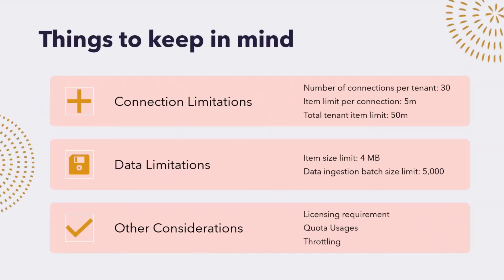Things to keep in mind when building custom connectors — there are some limitations. There are 30 connections you can build. There's an item level limit of 5 million items per connection, and a total tenant item limit of 50 million. There are also data size limitations on how big one item can be, batching size considerations, licensing quota, and throttling. There are 100+ out-of-the-box connectors available — for services like Jira, Box, Salesforce. You can just configure those and start using them without writing any code, and the indexing schedule, full crawl, and incremental crawl are handled behind the scenes.